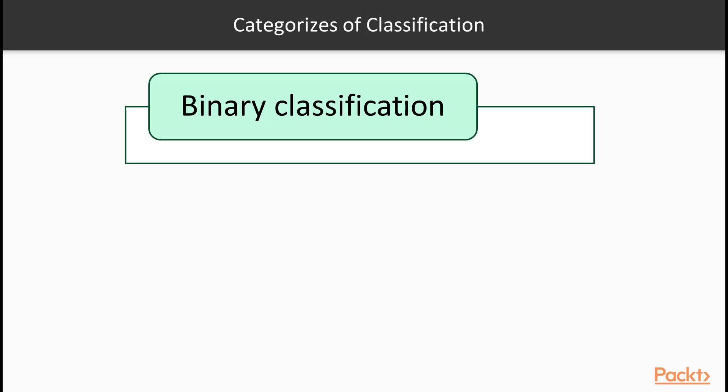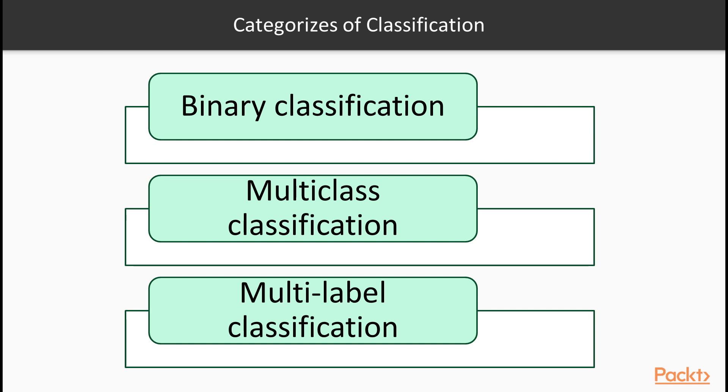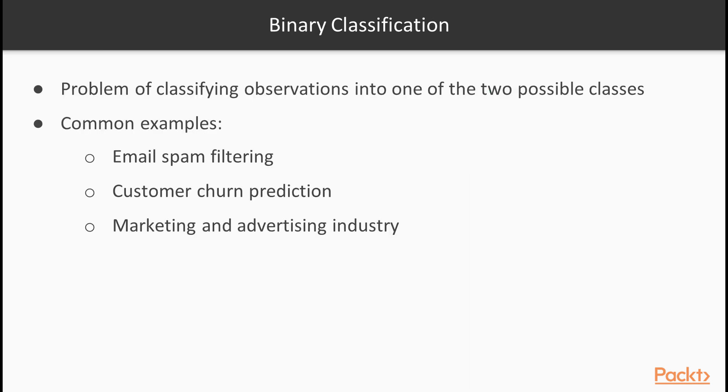Based on the possibility of class output, machine learning classification can be categorized into binary classification, multi-class classification and multi-label classification. First, let's have a look at binary classification.